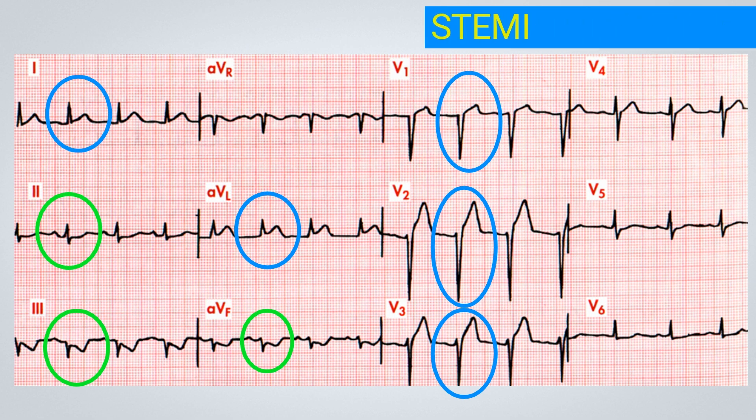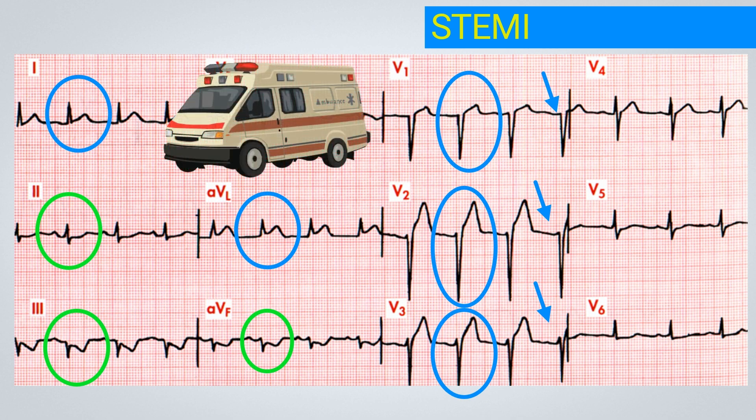We can already notice from V1 to V3 that there is a reduction in the R-wave amplitude, which means the QRS complex is not progressing as much, likely due to the onset of wall necrosis. The main diagnosis is an anterior acute myocardial infarction with a less significant lateral component. This patient should be prioritized for referral to the emergency department and immediate care.